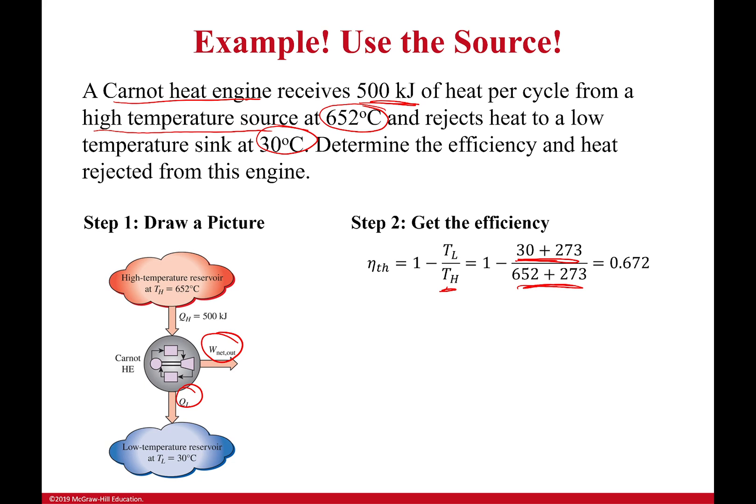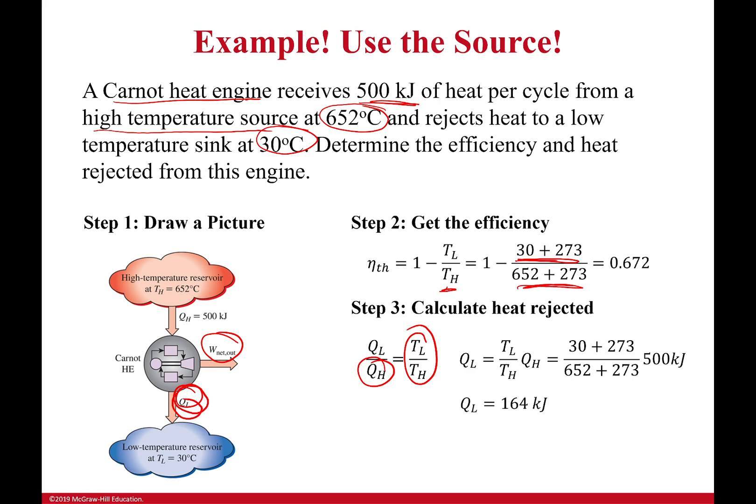That got me the efficiency, but what about that heat being rejected? For a Carnot heat engine, the ratio of heat rejected to heat input is the same as the ratio of my temperature of my sink to the temperature of my source. I know these temperatures, I know this heat, I can therefore solve using algebra for my heat at the low temperature side. So I plug it in and I get my heat rejected is 164 kilojoules.